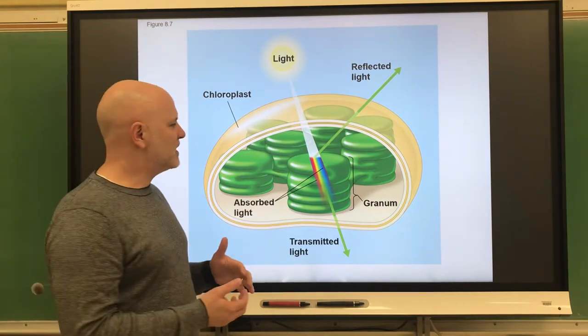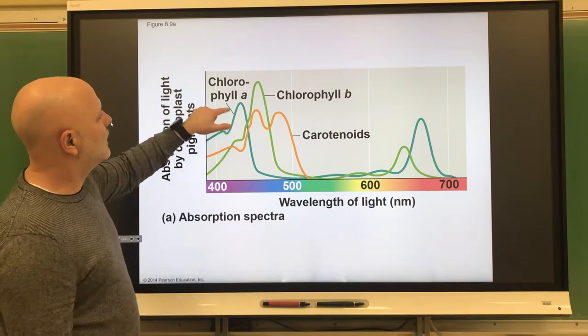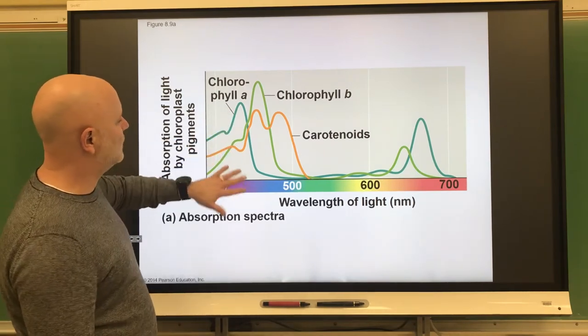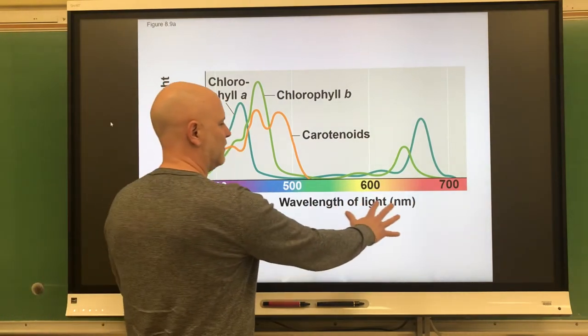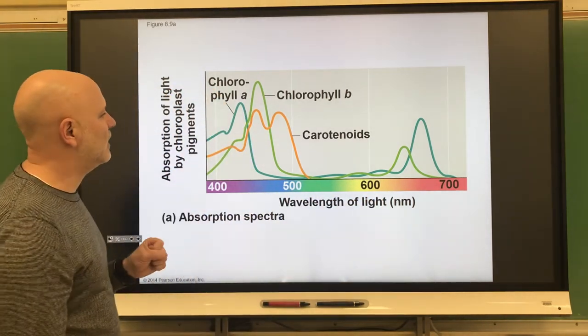Now we look at the photosynthetic pigments. Chlorophyll A is the main photosynthetic pigment. So chlorophyll A, you can see, this is looking at wavelength of light absorbed, and the higher the curve is, the more light of that color it absorbs.